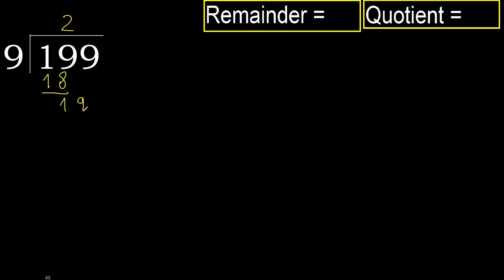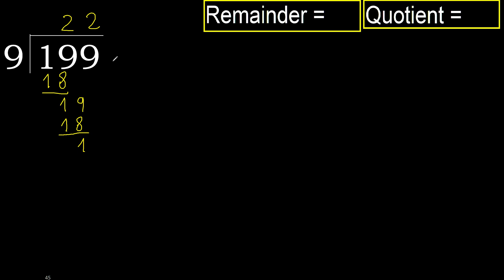Next: bring down 9. 9 multiplied by 3 is 27, which is greater. Multiply by 2: 18 is not greater. Subtract. Next — that is not a number, therefore finish it.